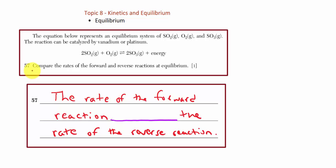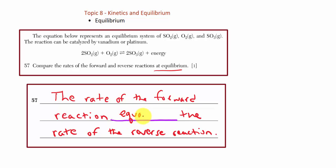Question 57: Compare the rates of the forward and reverse reactions at equilibrium. The definition of equilibrium is what we're looking for. The rate of the forward reaction equals the rate of the reverse reaction — that's what makes a system an equilibrium system.